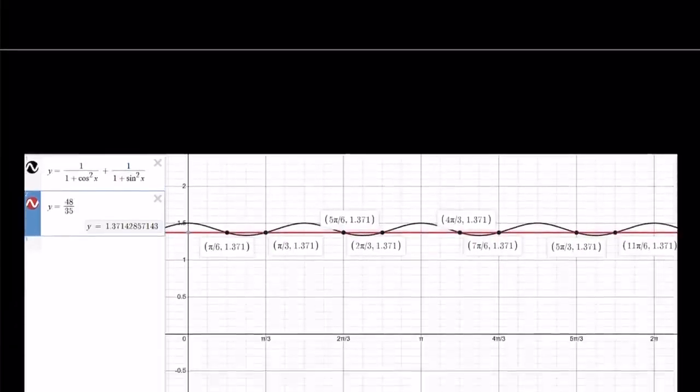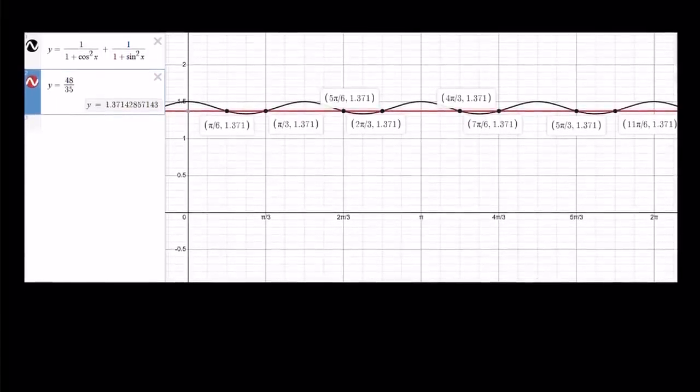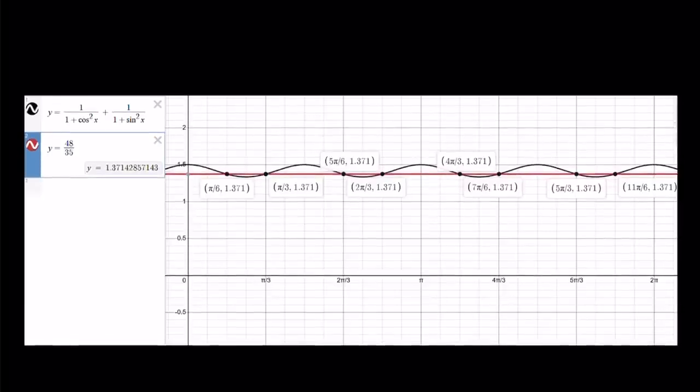Now let's go ahead and take a look at the graph and see how we can wrap this up. So I just graphed y equals one over one plus cosine squared plus one over one plus sine squared and the horizontal line y equals 48 over 35. And as you can see, between zero and two pi inclusive, there's quite a few intersection points which are all solutions. And this brings us to the end of this video.